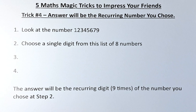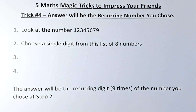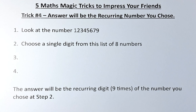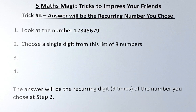So first, the trick you need to do is choose a number from 1 to 9, except you can't choose 8 because 8 is not in this list. You can choose 1, 2, 3, 4, 5, 6, 7, or 9. So choose a number from that list.